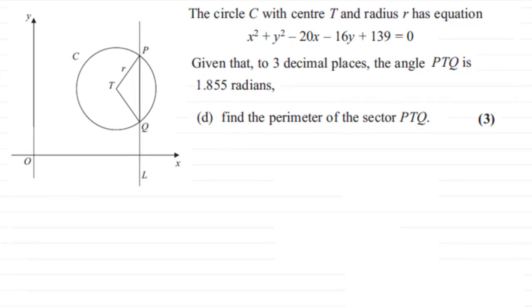Now this last part of the question is all about finding the perimeter of this sector of the circle. We're given, to three decimal places, the angle PTQ is 1.855 radians. In other words, this angle in here, let's mark it in—that angle is 1.855 radians.